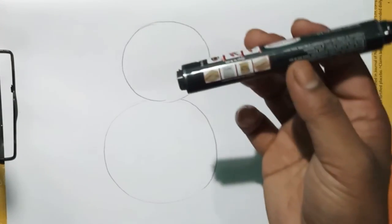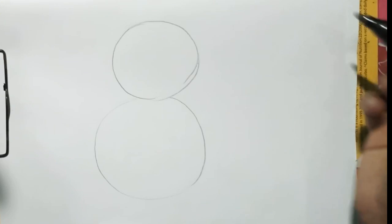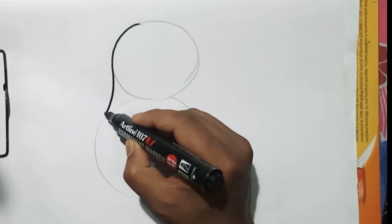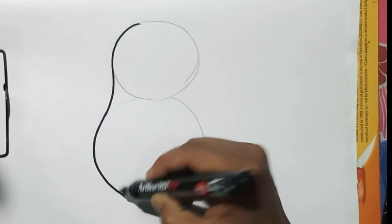Now I am going to draw this papaya with the help of a permanent marker. Connect this the same way I am doing here.